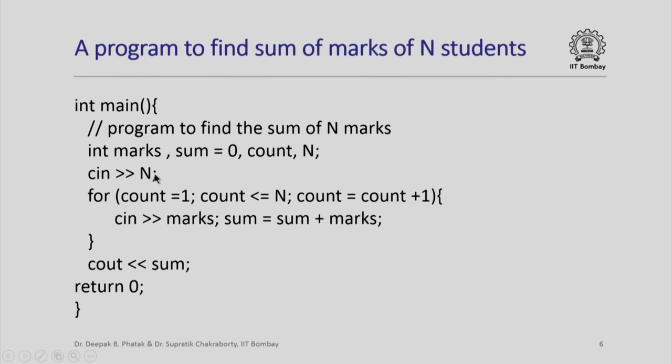I input the value of n and I set up this iteration. You are all familiar with this: for count equal to 1, count less than equal to n, count equal to count plus 1, sets up an iteration which starts with count equal to 1 and ends with count equal to n. It will do this iteration n times.